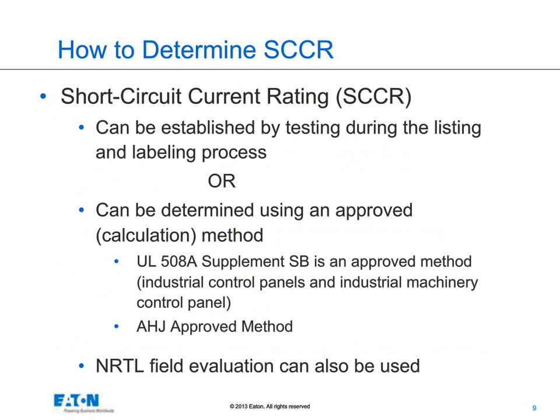How do we determine the SCCR for equipment? The first method would be to actually test the equipment. However, for a lot of custom equipment, testing is not really an option. So the vast majority of equipment, especially industrial control panels, would be determined by the approved method — UL508A Supplement SB. There is no other AHJ-approved method, so the 508A method is typically what's being done. If you have existing equipment and are looking to comply with OSHA requirements for proper SCCR, you might look at a field evaluation from a nationally recognized testing laboratory, such as UL or ETL.